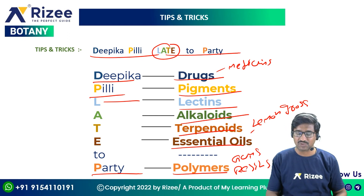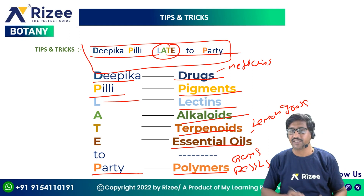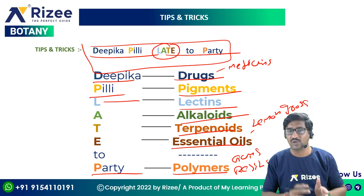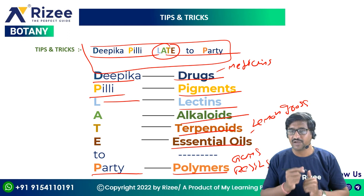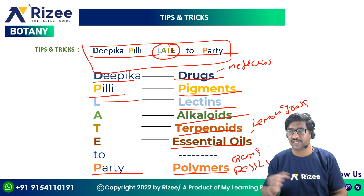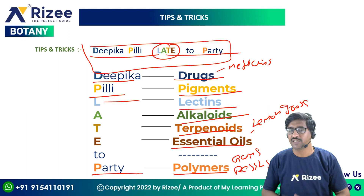To recap: 'DP ka pilli late to part' — D=Drugs, P=Pigments, L=Lectins, A=Alkaloids, T=Terpenoids, E=Essential oils, P=Polymers (Gums and Resins). This is the complete mnemonic for secondary metabolites.